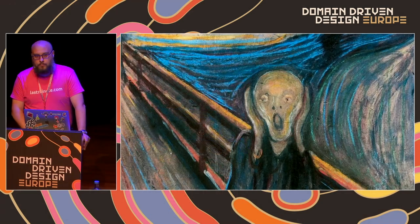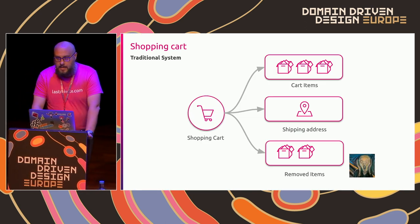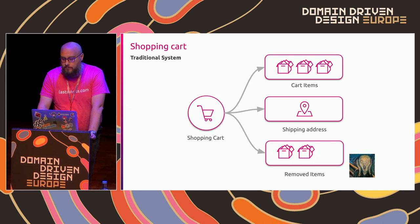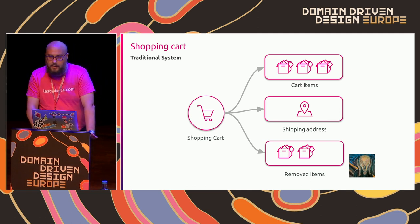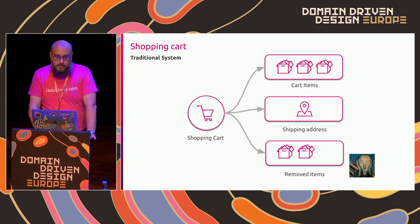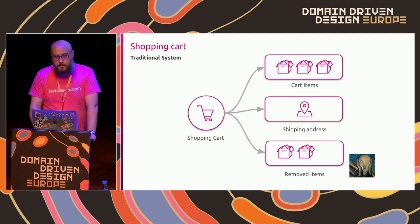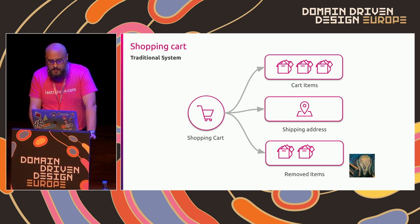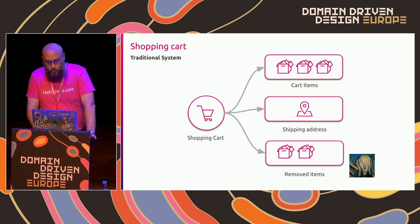Given this new requirement, we can evolve our system. We have a new collection with the removed cart items. When a user adds an item to the shopping cart, it will be added to the cart items collection. When a user removes a product from the cart, it will be deleted from the cart items collection and added to the removed items collection. It could work, but it is a little bit clumsy — there is a gut feeling that something is wrong with this model.